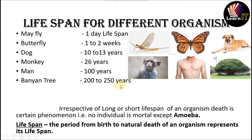Dog 10 to 13 years, cow 20 to 25, man 100 years, parrot 140 years, banyan trees 200 to 250 years, and the list goes on. When we move from mayfly to banyan tree, the size and complexity of the body also increases. A shorter lifespan means organisms must reproduce constantly so that their species can survive. Irrespective of long or short lifespan, death is a certain phenomenon — no individual is immortal. Lifespan is defined as the period from birth to natural death of an organism.